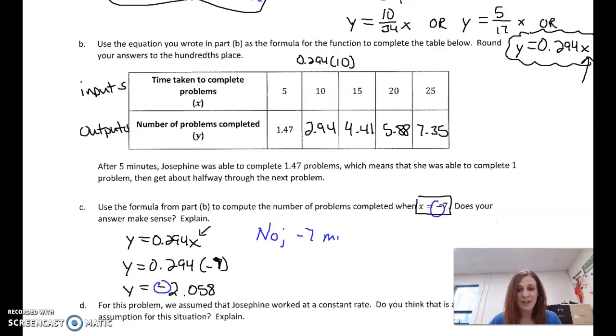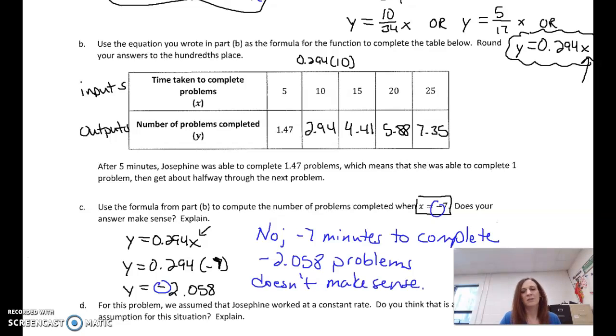So we're going to just say no. It does say to explain, so I'm going to say negative 7 minutes to complete negative 2.058 problems doesn't make sense. That's why you always want to pull that real life factor in there. There was nothing wrong with this problem. We substituted a number in and got an answer. But according to talking about time, whether it takes to do a problem and the number of problems completed, it just doesn't make sense.